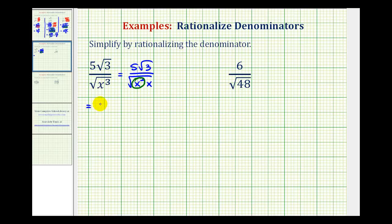So now we have 5 square root 3 divided by x square root x. But we still have to rationalize the denominator. We don't want to have the square root x here. So notice how if we had one more factor of x underneath the square root, it would simplify perfectly and eliminate the square root from the denominator.